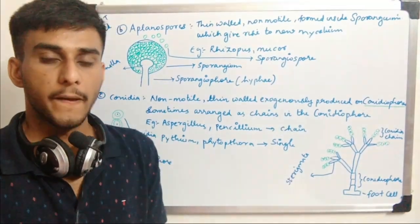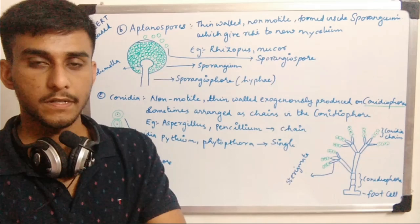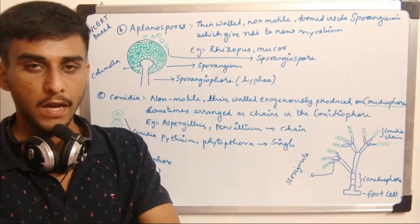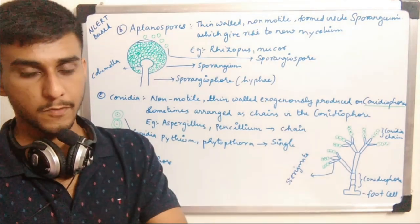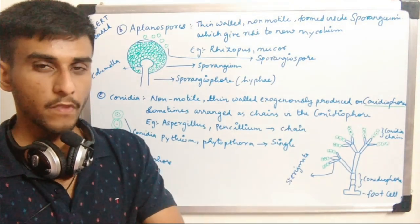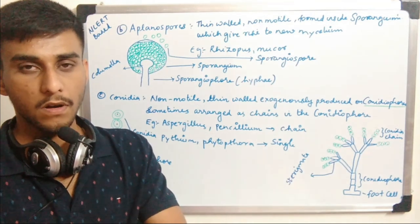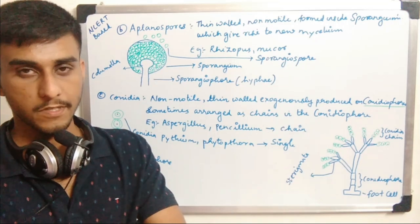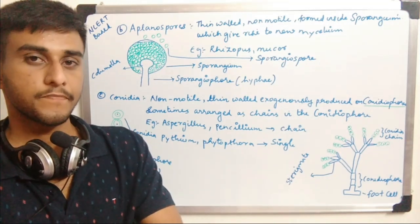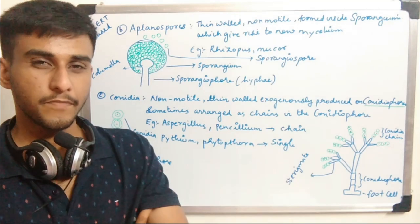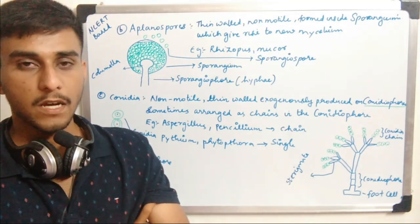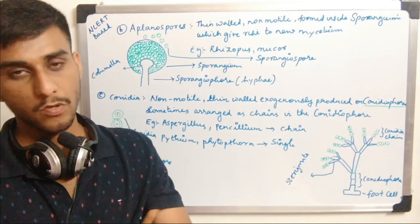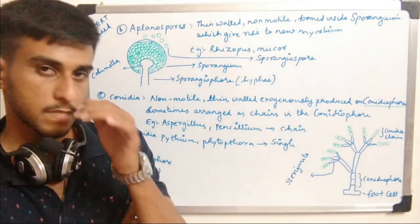The second type of asexual spore is the aplanospore, also known as sporangiospore. They are thin-walled, non-motile spores produced in a specialized structure known as the sporangium — or sporangia in plural. They are non-motile so they cannot be self-propelled and need an external agent.